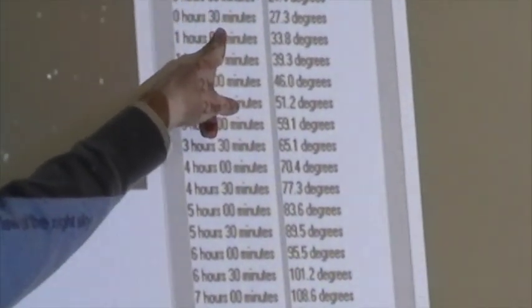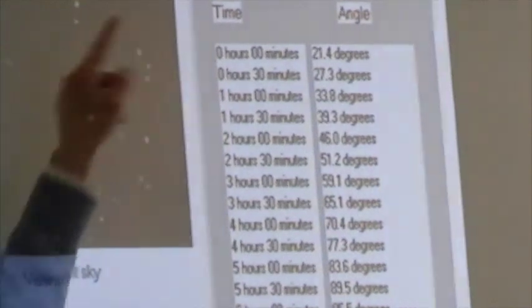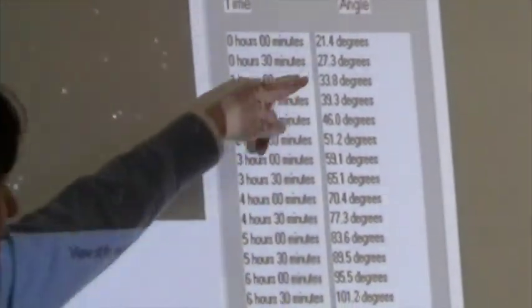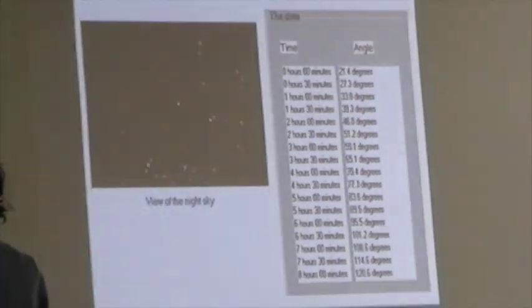1, 1.5, 2, 2.5 and so on. And then you have the angular position of the star in the sky.